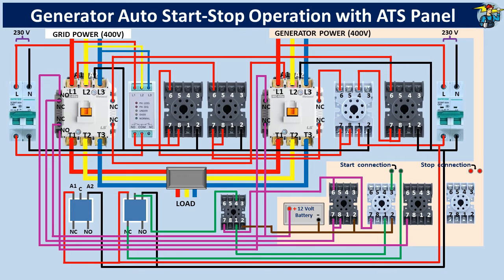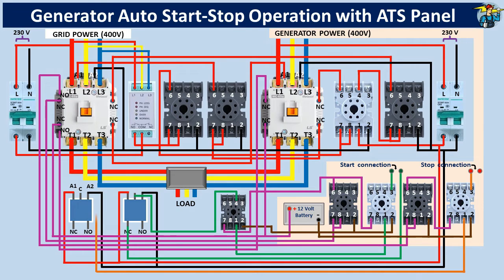Port number 7 should be connected to common port number 8. The negative end of the battery should be connected to port number 2 on the timer. Connect port number 6 of the generator stop timer to port number 7 of the generator stop relay. Connect the negative end of the battery to port number 2 of the relay. The stop connection points of the generator, where the stop push button or stop key is connected, will be connected through 2 relays — through the normally open contact points 1 and 3 of the stop relay, and through the common terminal and normally open terminal of the SPDT relay for generator stop control.